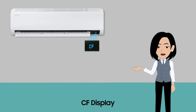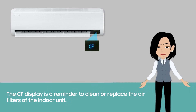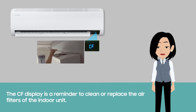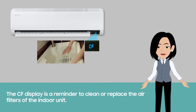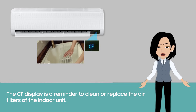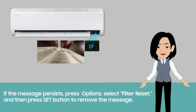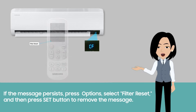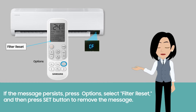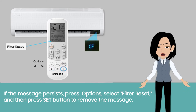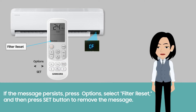CF. The CF display is the reminder to clean or replace the air filters of the indoor unit. If the message persists, press Options, select Filter Reset, and then press the Set button to remove the message.